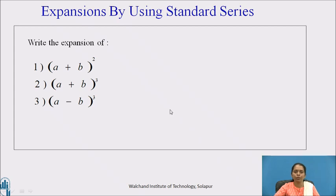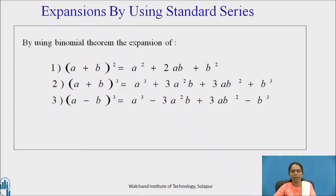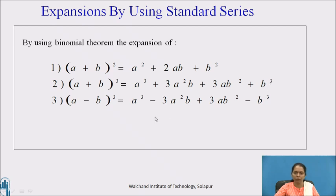Before we proceed to the next example, write the expansions of: first, (a+b)²; second, (a+b)³; and third, (a-b)³. By using the binomial theorem: (a+b)² = a² + 2ab + b²; (a+b)³ = a³ + 3a²b + 3ab² + b³; and (a-b)³ = a³ - 3a²b + 3ab² - b³.